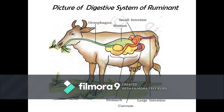Here is a picture of the digestive system of a ruminant. You can see the esophagus and the small intestine, with the rumen in between. There is also the stomach, the caecum, and the large intestine.